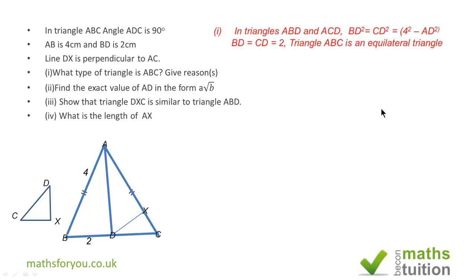For the first one, triangles ABD and ADC are congruent. They've got AB is 4 and AC is 4, they've got a common line which is AD, and we've got 90 degrees there, which will imply that BD is equal to BC.